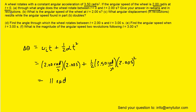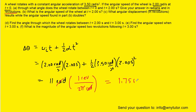If we calculate that on our calculators, we should get exactly 11 radians. Now the question also wants us to report our answer in revolutions, so we make the following conversion whereby one revolution is equivalent to two pi radians. The radians cancel, giving us 1.75 revolutions. So 1.75 revolutions and 11 radians are the two answers.